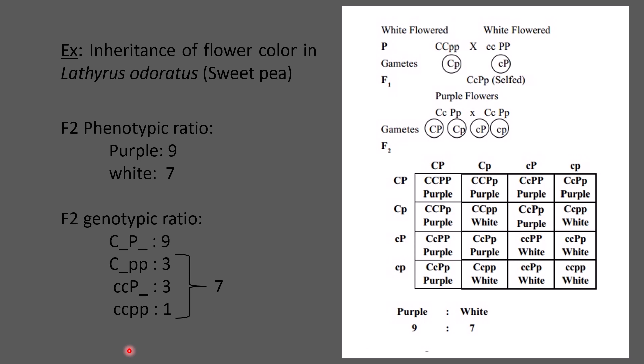The first case of two non-allelic gene interaction affecting a single trait was discovered by William Bateson and Reginald Punnett in 1906. They discovered an unexpected gene interaction while crossing flower color in Lathyrus odoratus, the sweet pea. When they crossed a true-breeding purple-flowered plant with a true-breeding white plant, the F1 hybrids were all purple. Self-crossing the F1 gave purple and white in a 3:1 ratio — a normal monohybrid ratio.